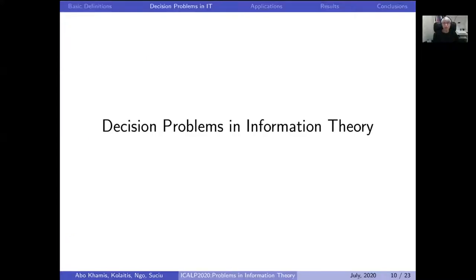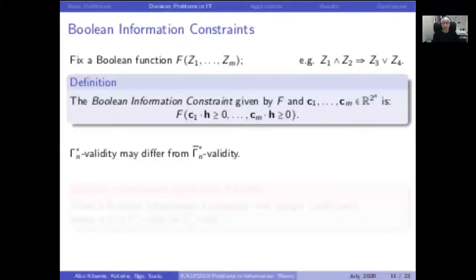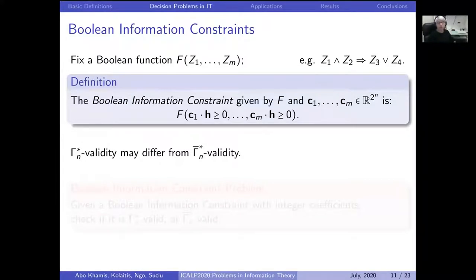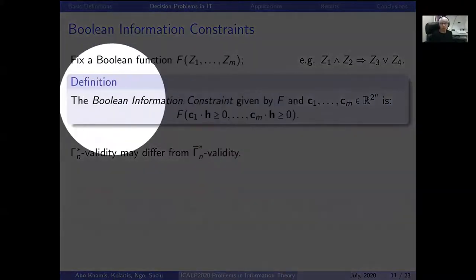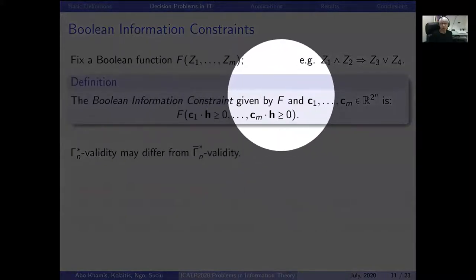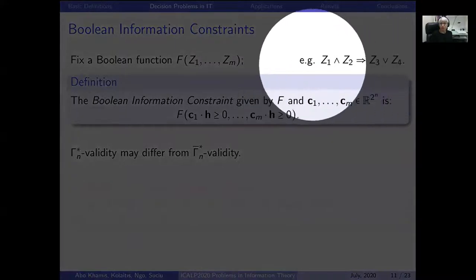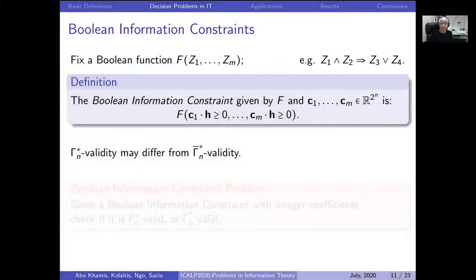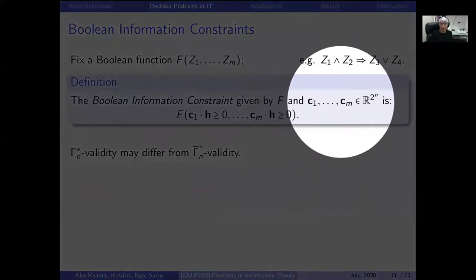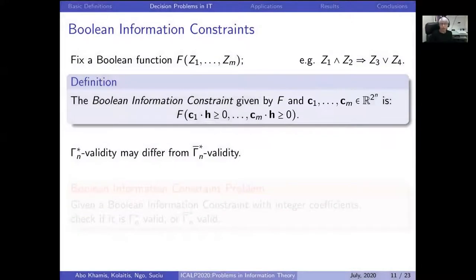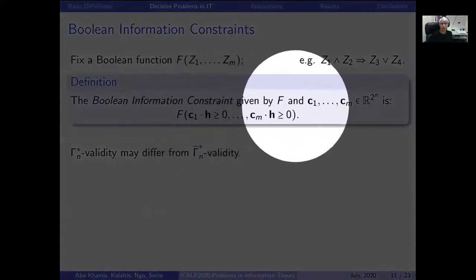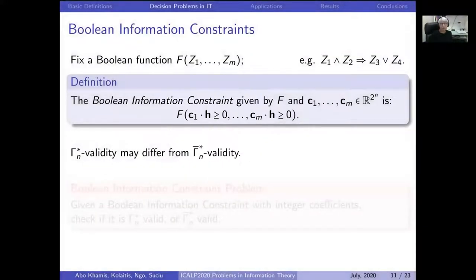Today we face applications requiring more complex constraints over information inequalities than simple linear ones. The most general form we consider is Boolean information constraints. A Boolean information constraint is given by a Boolean formula F with Boolean variables and vectors of real coefficients. The constraint asserts that this Boolean function applied to the inequalities defined by those coefficient vectors is true. In this case we distinguish between validity over entropic vectors and validity over almost entropic vectors.